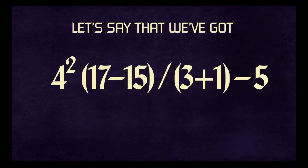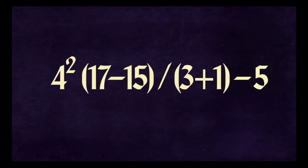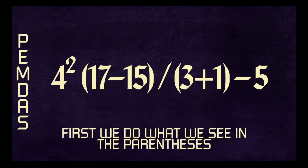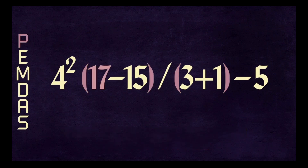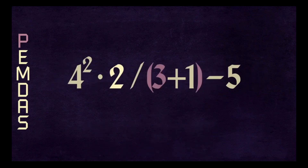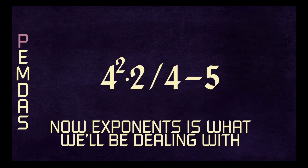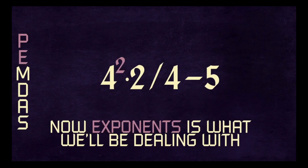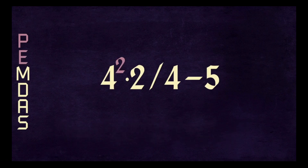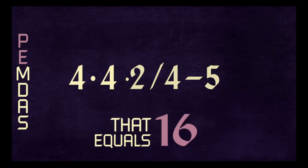Okay, let's say that we've got this. Let's use PimDaz, see what we accomplish. First we do what we see in the parentheses: seventeen minus fifteen, that is two indeed. Three plus one, that is four — yes, I'm brilliant. Now exponents is what we'll be dealing with: four to the second means four times four, that equals sixteen, and yes I am sure.